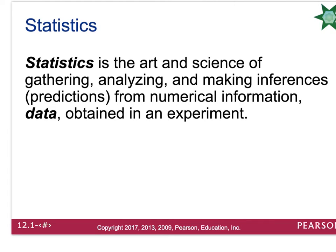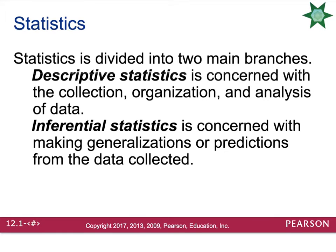The numerical information is called data, and this data is obtained in experiments. Statistics are divided into two main branches. There is descriptive statistics, which is concerned with the collection, organization, and analysis of the data. And then there's inferential statistics, which is concerned with making generalizations or predictions from the data that's collected.